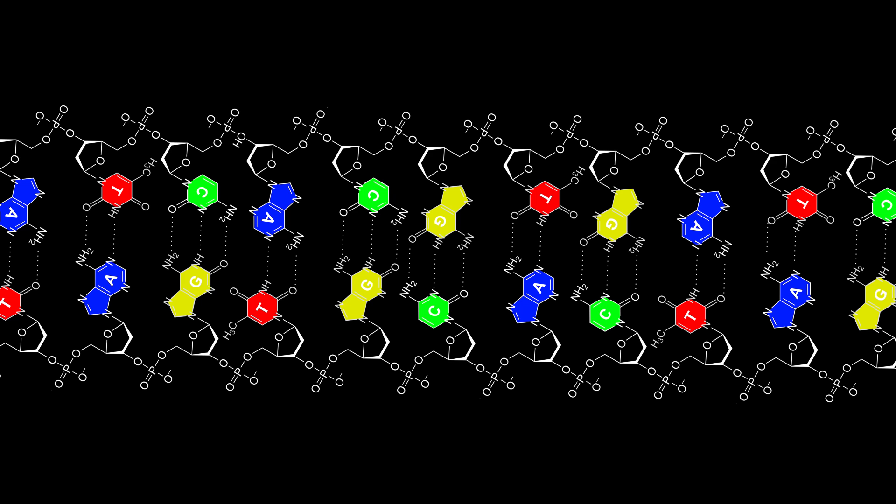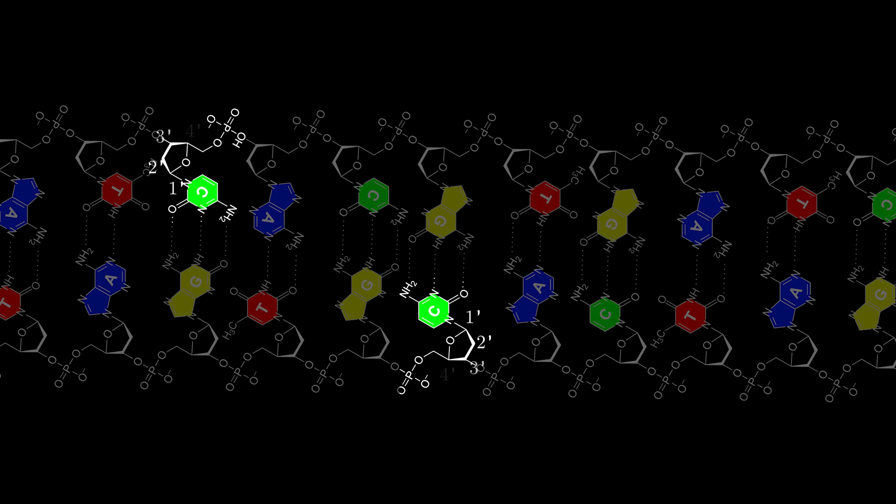Remember how we said that the sugar in each molecule has 5 carbons? Well, scientists realized that they could give each of these carbons a number, with the number 1 carbon, or 1' carbon, being attached to the nitrogenous base, and the number 5 carbon, or 5' carbon, being attached to the phosphate.